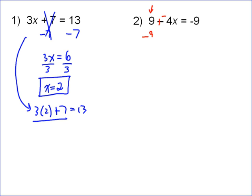So I get rid of it by doing the opposite, which is subtracting 9. So if I subtract 9 from both sides, this cancels. I'm left with a negative 4x on the left side. Be real careful that you get that negative there. And then that equals, well, negative 9 minus 9 is just negative 18.